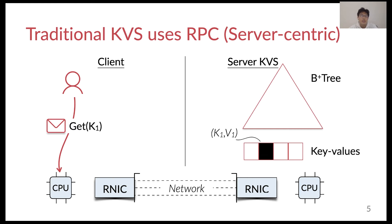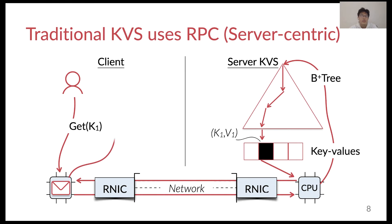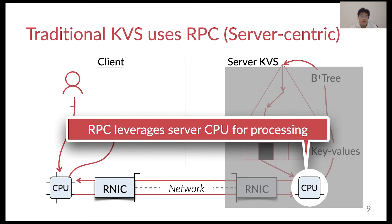It is server-centric because the key-value workloads focus on the server CPU. For example, to issue a key-value request at the client, say get k1, the client will first send the request to the NIC with a message. The message is then transferred from the client to the server. After receiving the request at the server CPU, the server will traverse the B-tree to read the value and send the value back to the client with another message. As we can see, the performance of the server CPU is critical to the server-centric design.